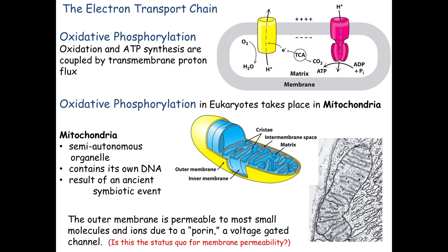The outer mitochondrial membrane has pores where small molecules can pass through, so it's not watertight. The inner membrane, however, is tightly sealed — you can't cross unless you have a specific carrier. To move things across the inner membrane, we need gated channels or pores. The ETC complexes pump protons from the matrix into the intermembrane space, which is continuous with the cytoplasm.